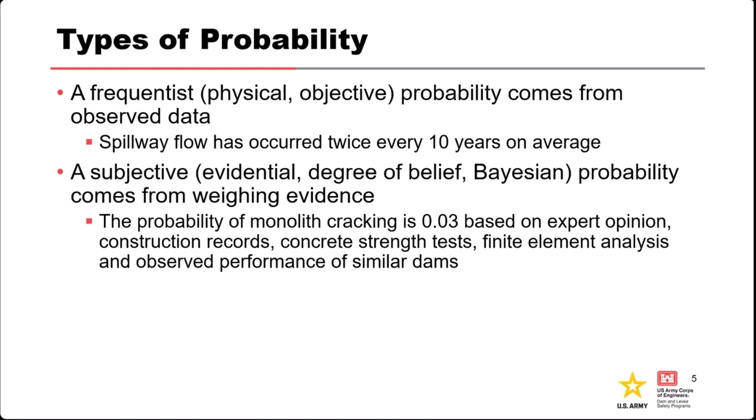The other type of probability is typically called a subjective probability, but you also see terms like evidential or degree of belief. Bayesian is a really common term used to describe this type. This type of probability comes from a weighting of information and evidence. One way to think about Bayesian and subjective probabilities is your willingness to bet on a particular proposition — the odds at which you would consider that bet fair would be your subjective or Bayesian estimate of probability.